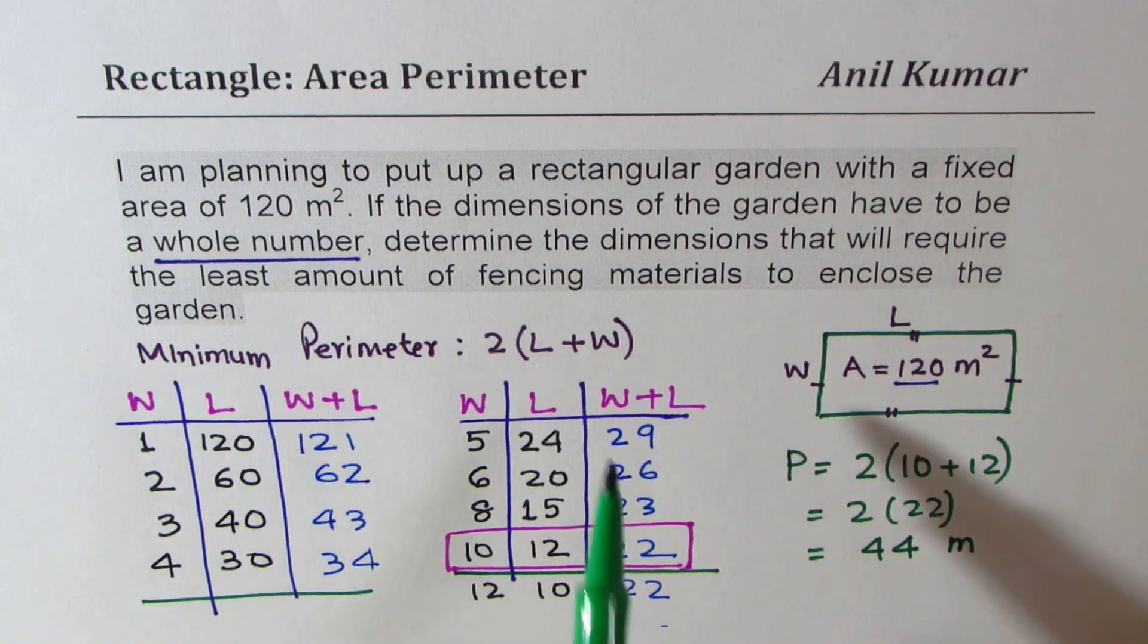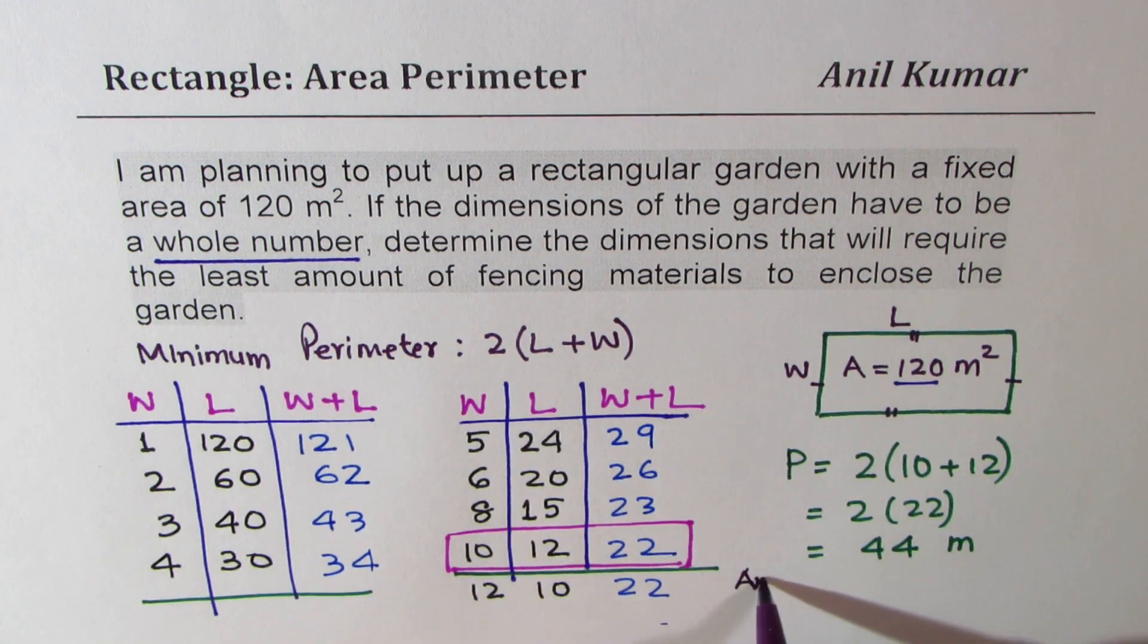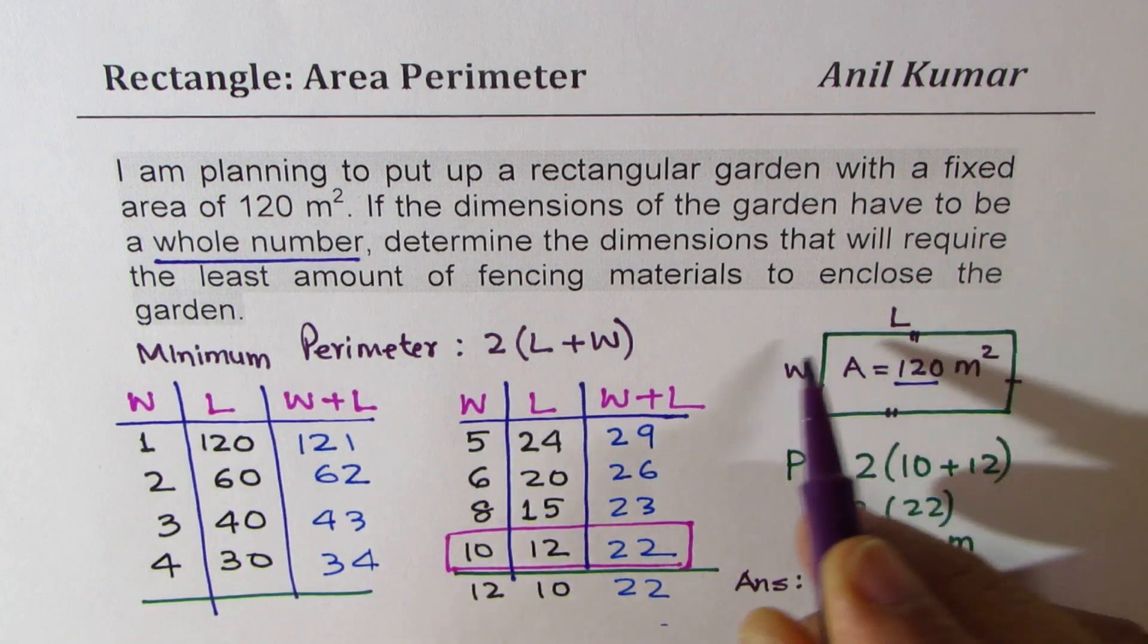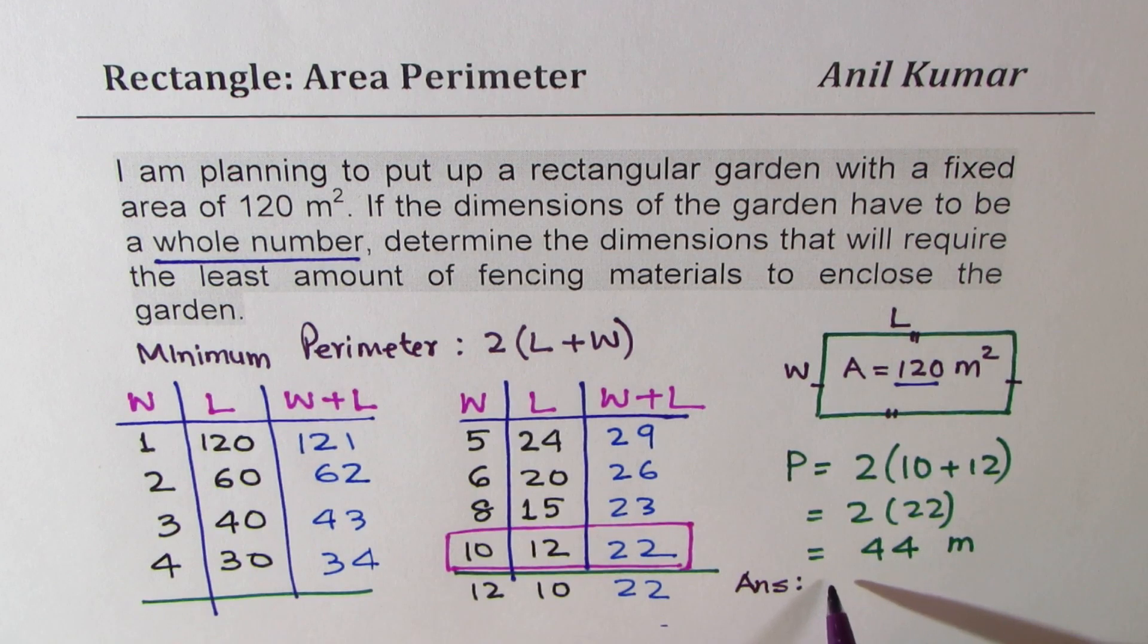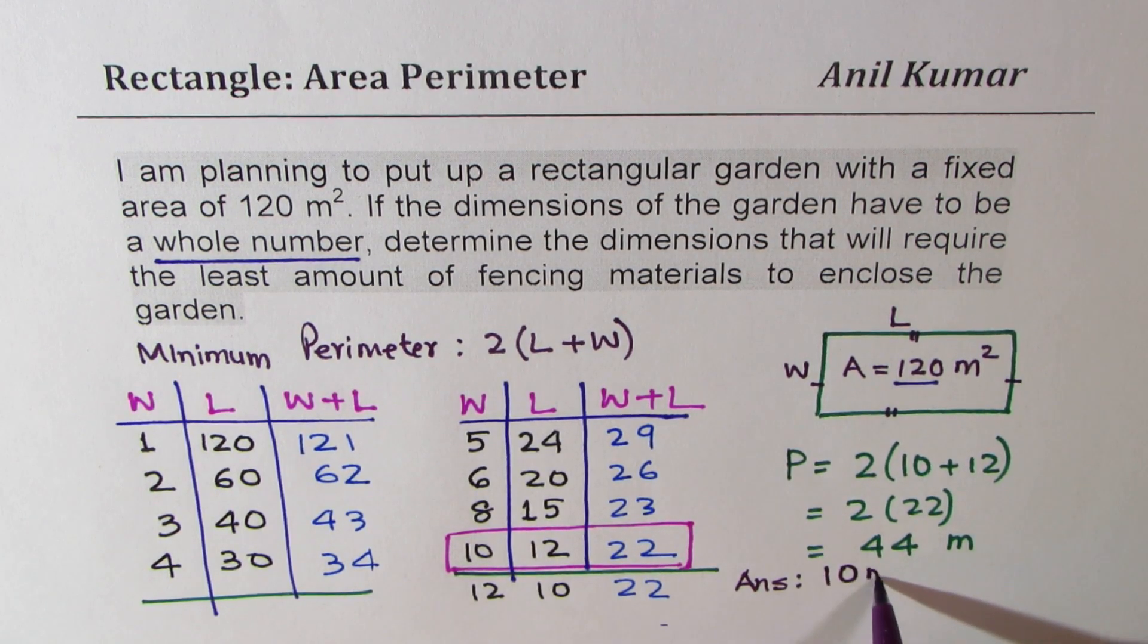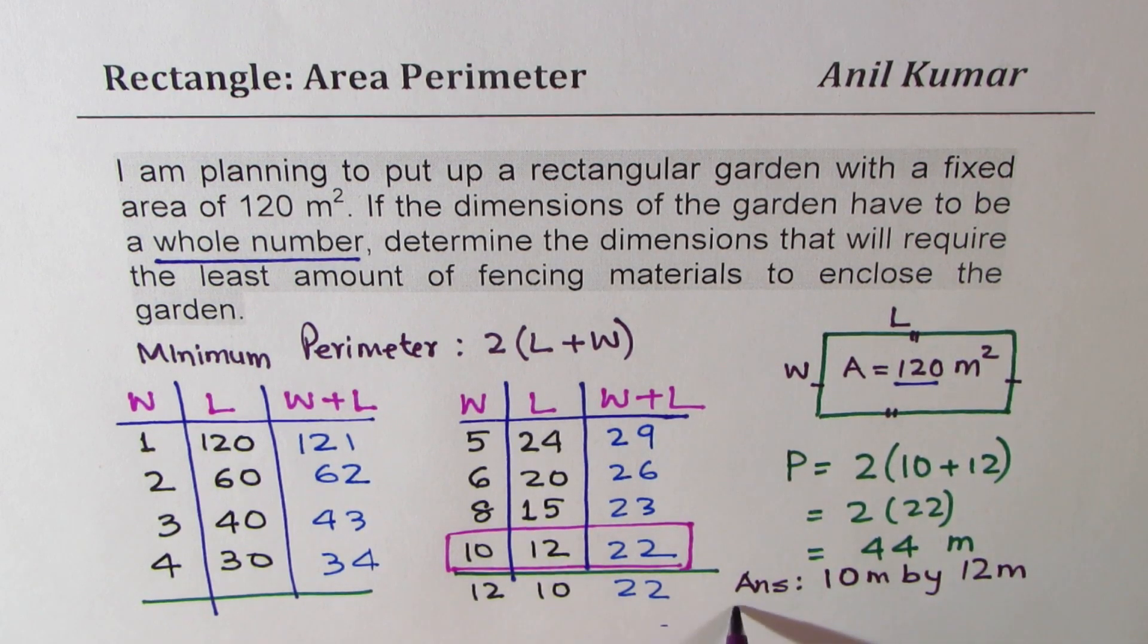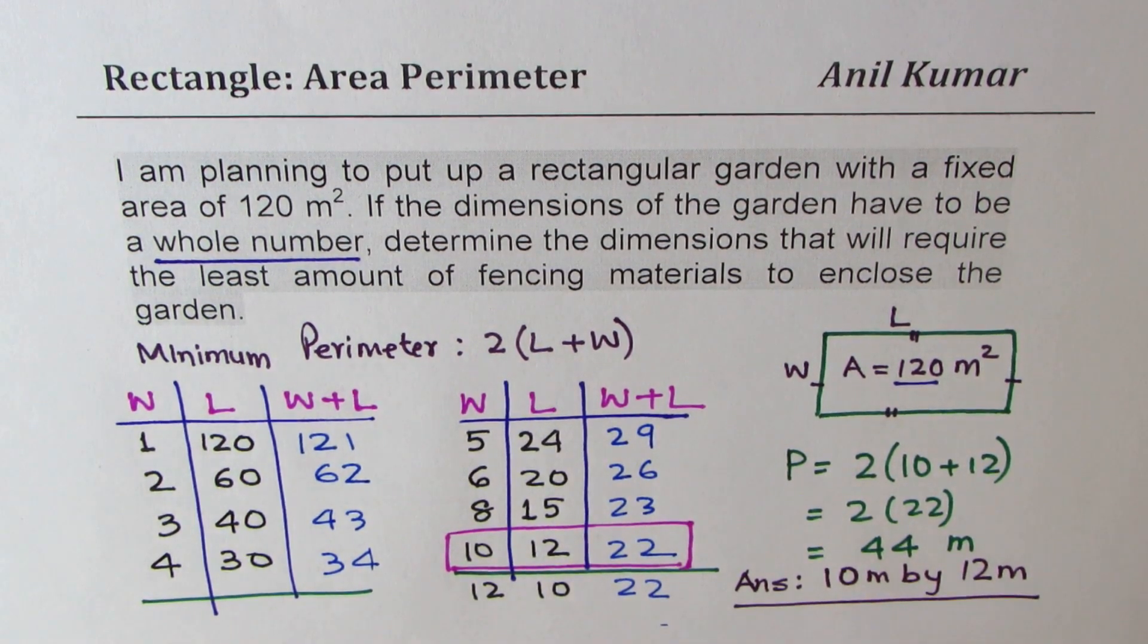which is 2 times 22, or equal to 44 meters. We need the minimum dimensions. So our answer should be that the dimensions of this particular rectangular field could be 10 meters by 12 meters for minimum perimeter.